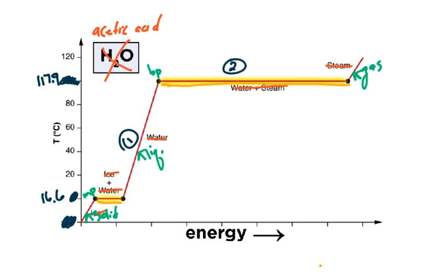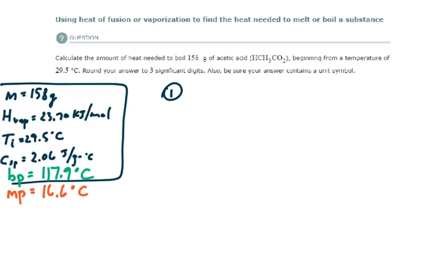So step one here, this is different than the last example. Last example we started on the phase change, but here we're not. We're starting here in the heating. So I'm not going to use the heat of fusion, and I'm not going to use the heat of vaporization yet. You only use heat of vaporization or heat of fusion when you are looking at energy required for a phase change. Right now we're looking at how much heat to go from here to here. We're going to use the specific heat formula.